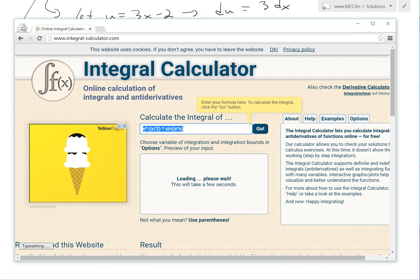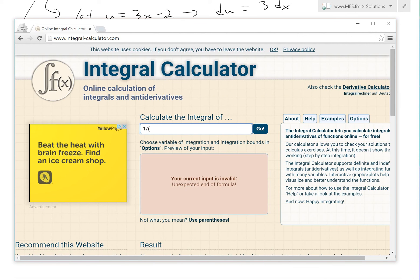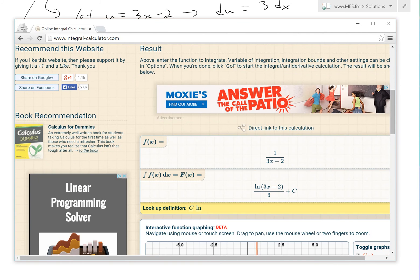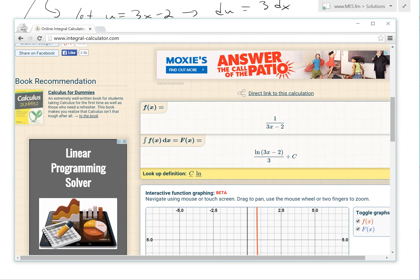So now if we would type this one out, and then this is going to be 3x minus 2. So that's this integral, and then click enter. Now it's solving. So there you go.